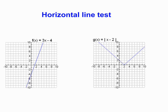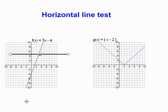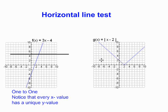One of the ways you can tell from the graph if it's a one-to-one function is to perform a horizontal line test. A horizontal line drawn anywhere on the graph should intersect the graph at only one point. Look at our second example here to the right — it's not one-to-one because the horizontal line intersects it at two points. That's because y-values are repeating.